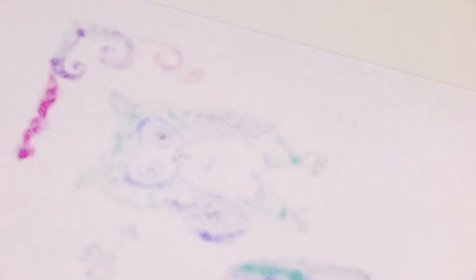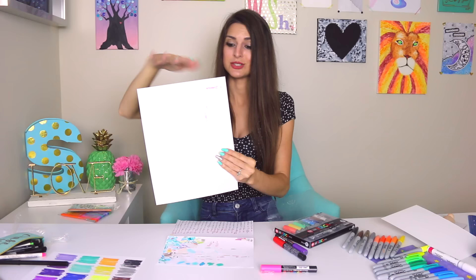It doesn't bleed through at all, even though the paper's really thin. You can see it through, so it ghosts a little bit. This is Sharpie on this side, and this definitely you can kind of see it bleed through a little bit. The Posca pen does not bleed at all. If you're working in a sketchbook, then that is something that you definitely want to be aware of.